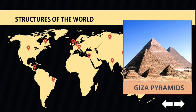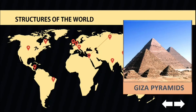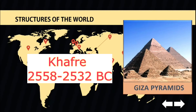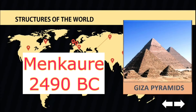The three pyramids were built as tombs for three different pharaohs during the 3rd and 4th dynasty. The first and biggest pyramid was built by Khufu between 2551 and 2531 BC, while the second oldest pyramid was built by his grandson Khafre between 2558 and 2532 BC. Lastly, the third pyramid was created by Menkaure, who is Khafre's son, and is believed to have been finished around 2490 BC.